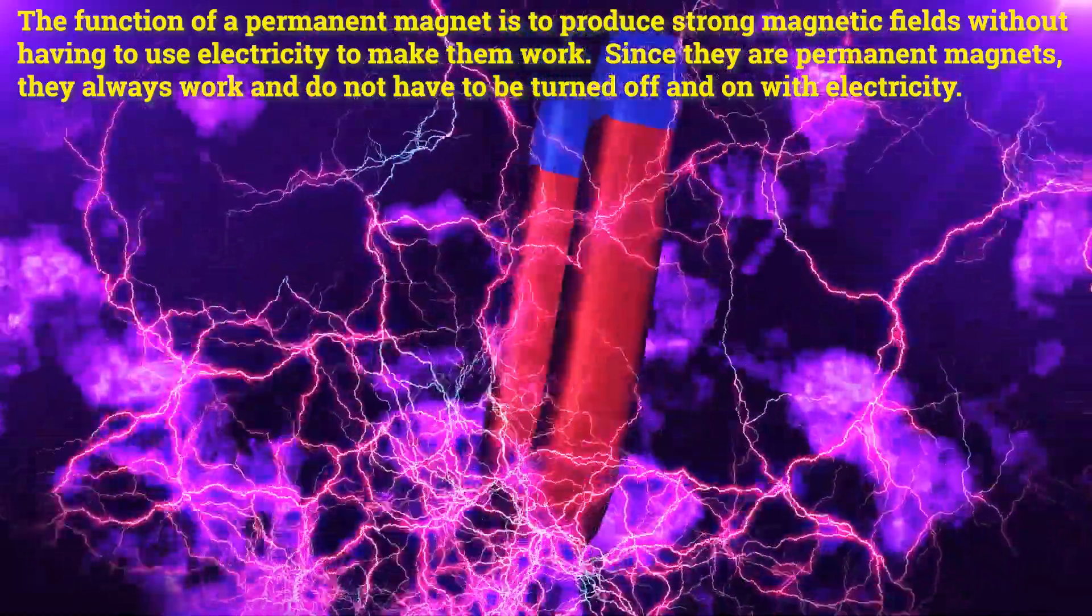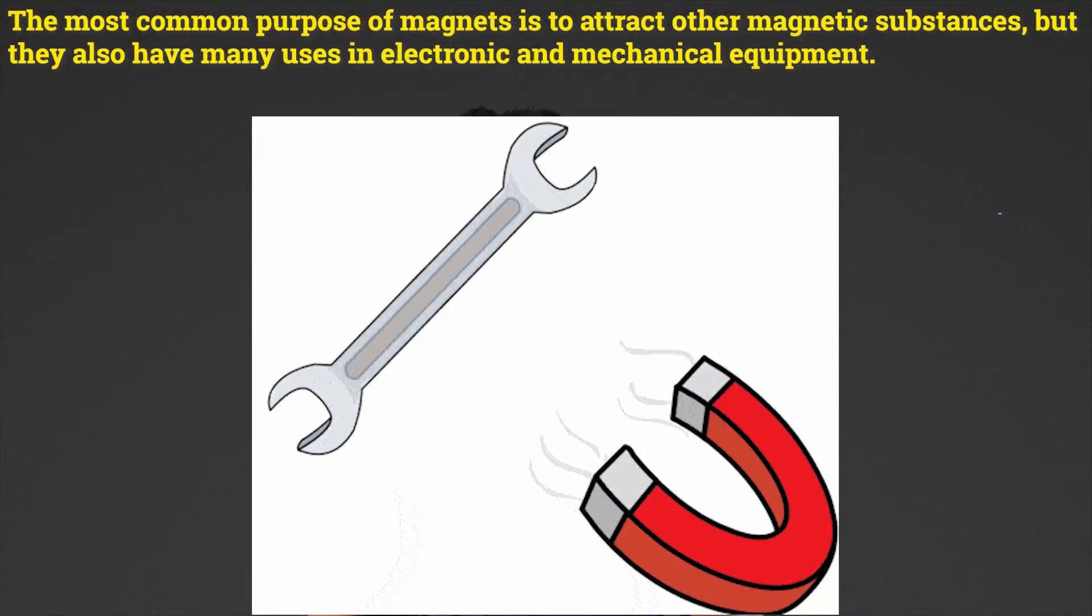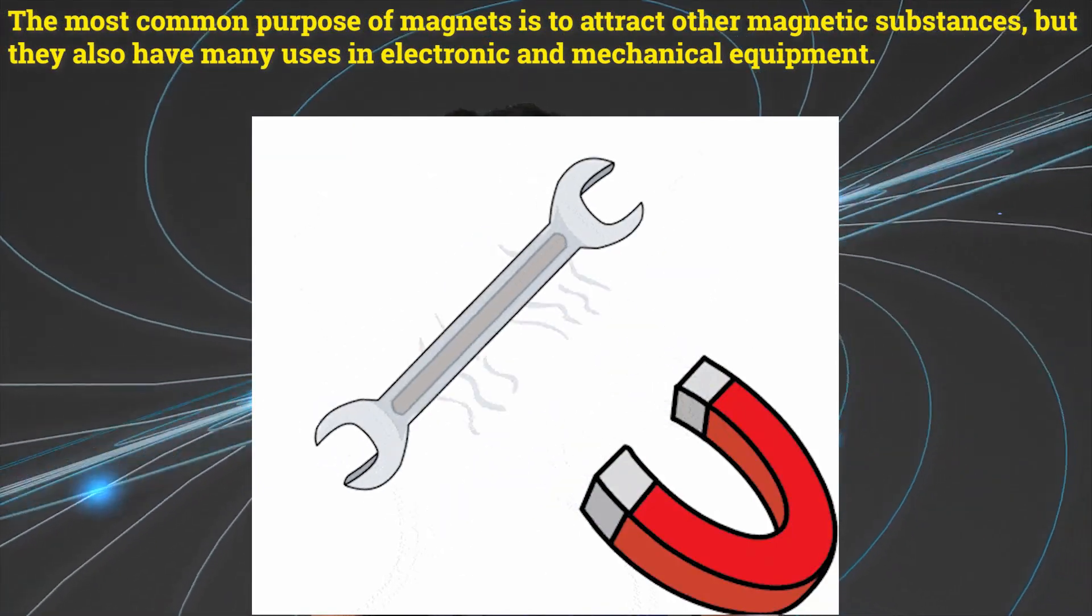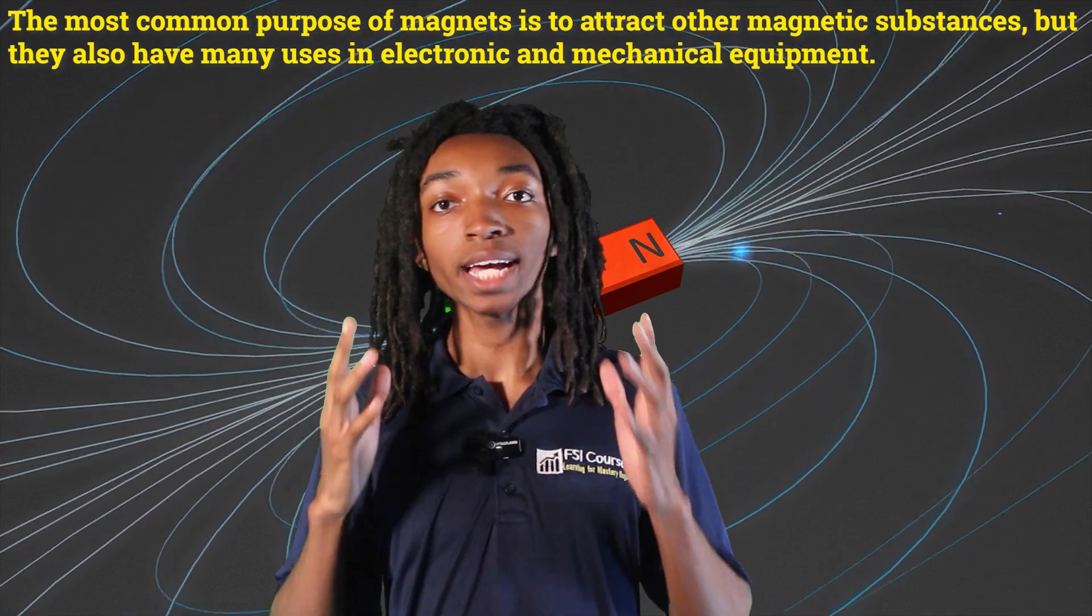Since they are permanent magnets, they always work and do not have to be turned off and on with electricity. The most common purpose of magnets is to attract other magnetic substances, but they also have many uses in electronic and mechanical equipment.